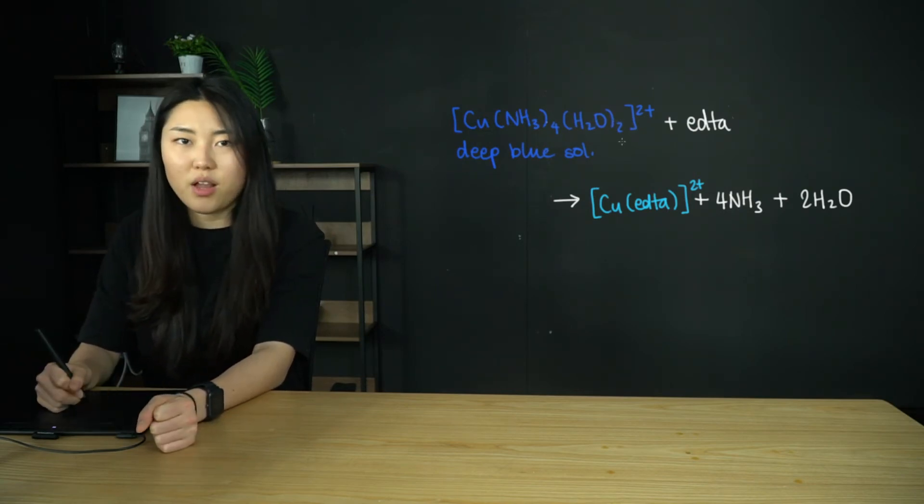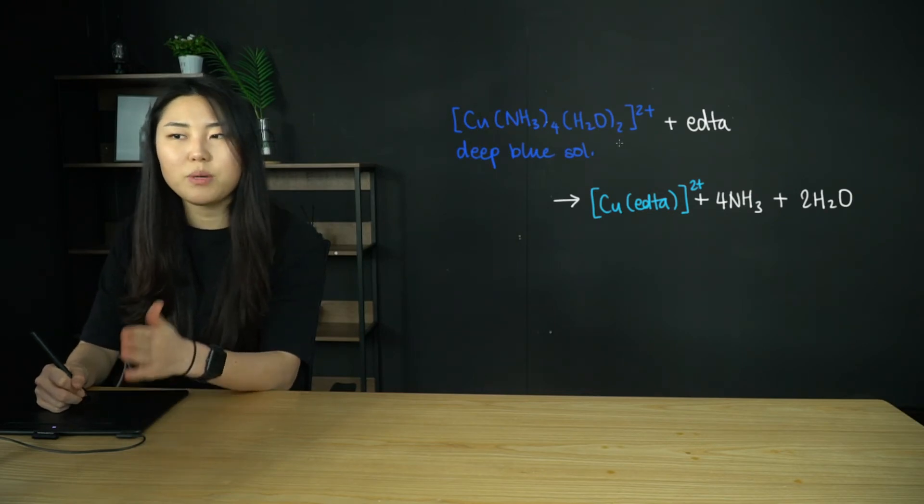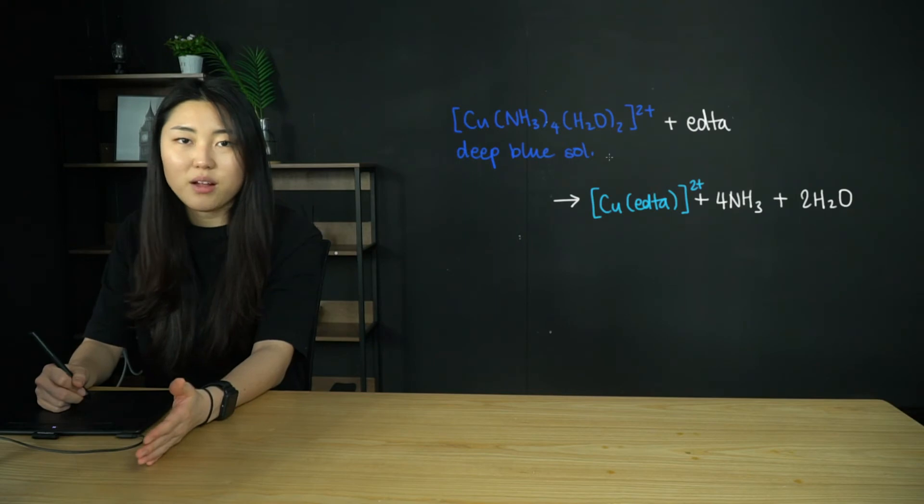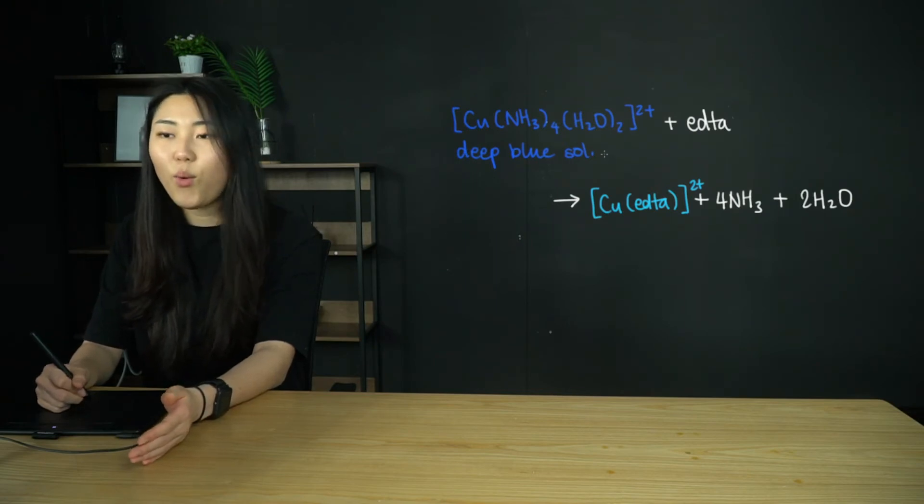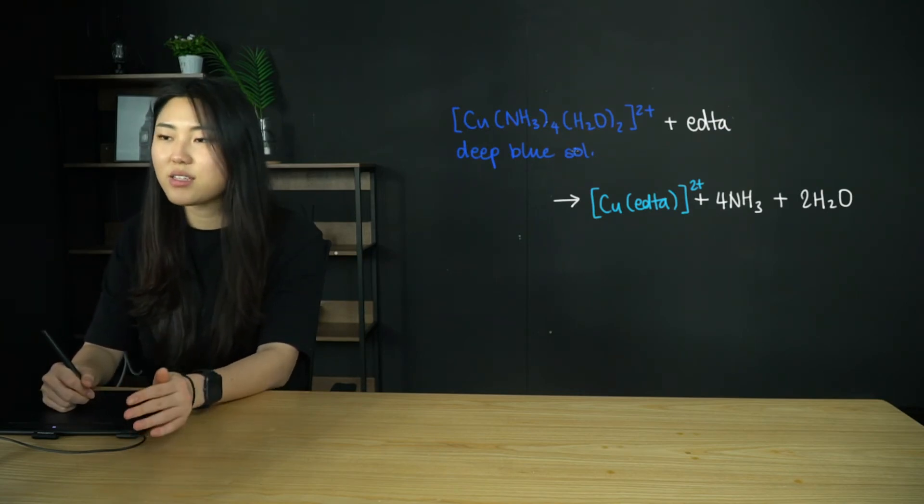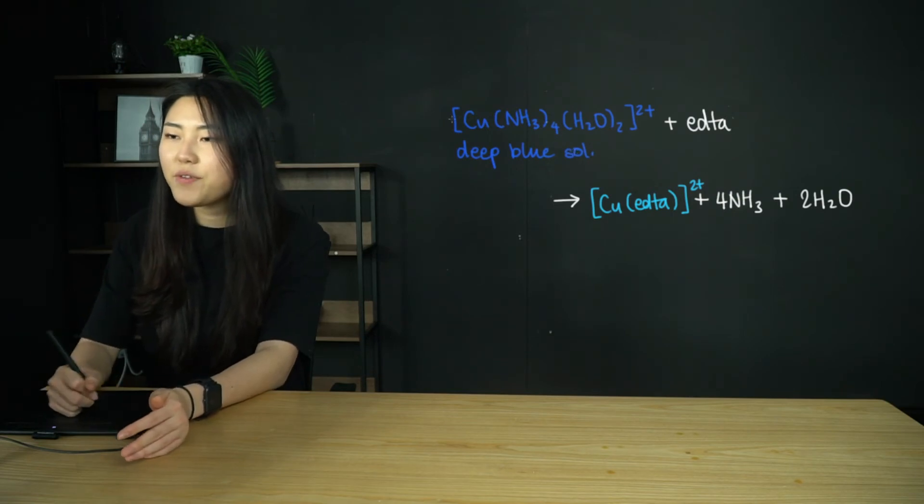These are all monodentate ligands, and this complex is going to have a deep blue color. You need to be able to distinguish between just a blue or a pale blue complex ion and a deep blue complex ion. This one is a deep blue complex ion. You have to memorize the colors.